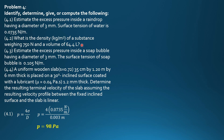So, what is the density in kilogram per cubic meter of a substance weighing 750 N and volume of 64.4 liters? First, we use density equals specific weight over G, where specific weight is weight in newtons over volume. And the volume is 0.0644 cubic meters. So, specific weight is 11,646 N per cubic meter.